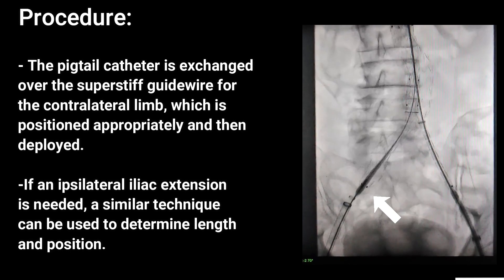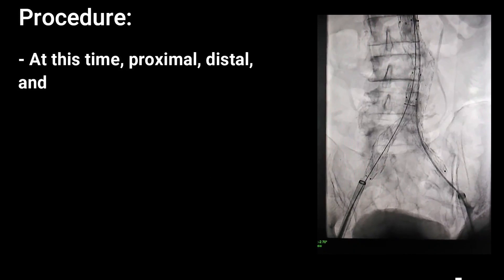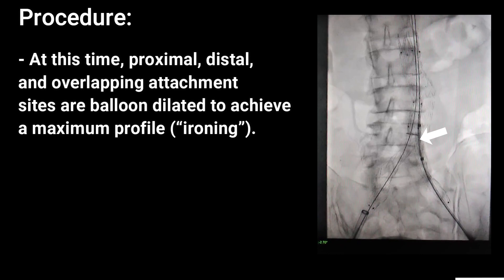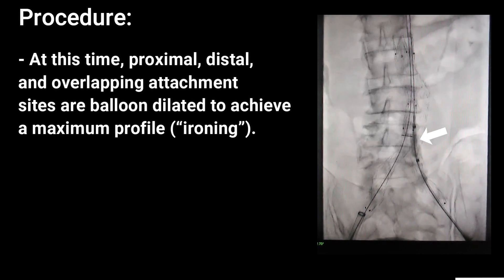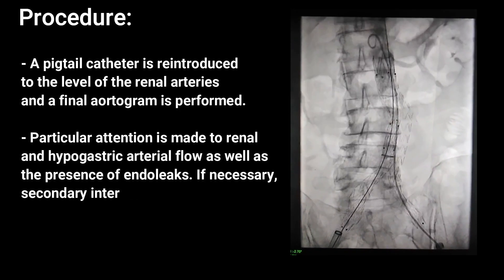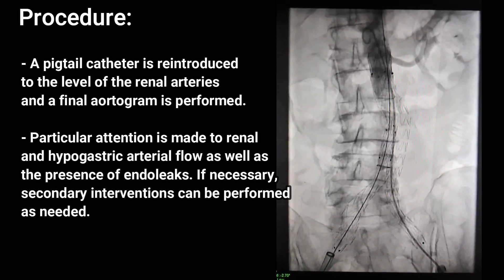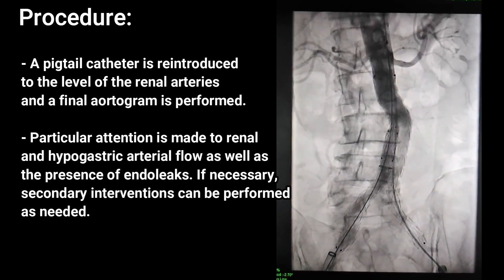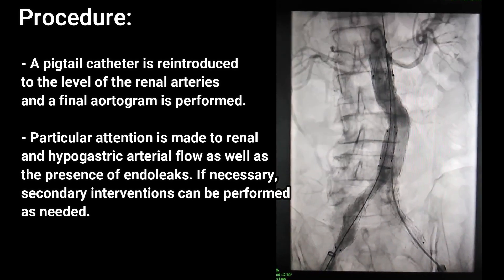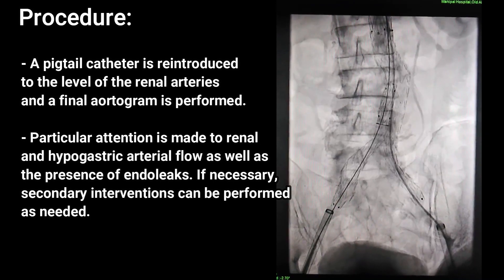After deploying, if an ipsilateral iliac extension is needed, a similar technique can be used to determine length and position. Proximal, distal, and overlapping attachment sites are balloon dilated to achieve a maximum profile — this process is called ironing. After balloon dilating the stent, a pigtail catheter is reintroduced to the level of the renal arteries and a final aortogram is performed. Particular attention is made to renal and hypogastric arterial flow, as well as the presence of endoleaks. If necessary, secondary interventions can be performed as needed.